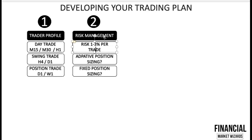We normally recommend risking just one to three percent per trade. If you're trading a ten thousand dollar account, one percent would be one hundred dollars per trade. There are different types of risk management: adaptive position sizing and fixed position sizing. In adaptive position sizing, you risk one hundred dollars per trade but adjust your position size based on your stop loss distance — a wider stop loss means a smaller position size, and a tighter stop loss means a bigger position size.